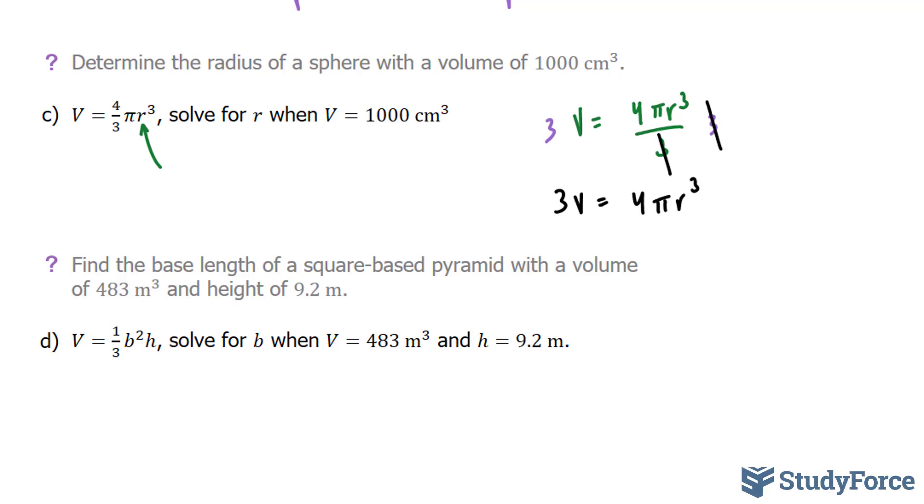Now we will divide both sides by 4 and this pi. Remember, pi is just a number. So we can group those together. If I divide 4 pi on both ends, I end up with R cubed is equal to 3V over 4 pi. Now unlike before where we had R to the power of 2, now we have R to the power of 3. So we're going to have to take the third root of both sides, also known as the cube root. So let's do that. The cube root of the left side and the cube root of the right side. The cube root of the left side gives us simply R.